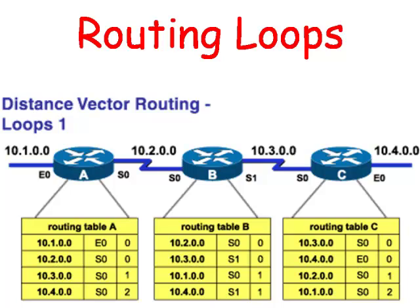Let's look at how a routing loop might occur. Suppose we had three routers: Router A, Router B, and Router C. Router C is directly connected to the 10.4 network. Router C will advertise to the 10.4 network, and Router B will advertise to Router A that it has a connection to the 10.4 network.